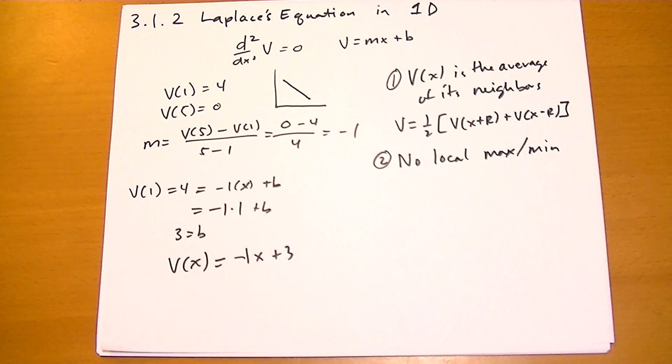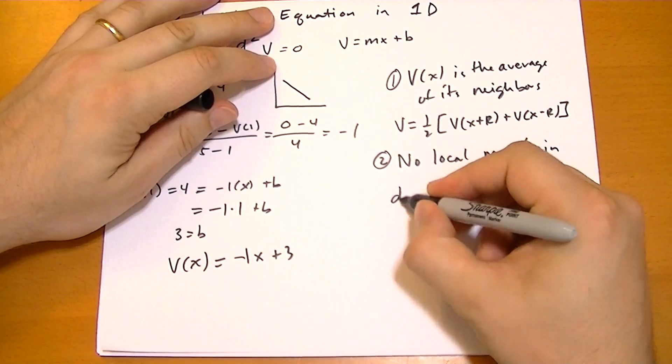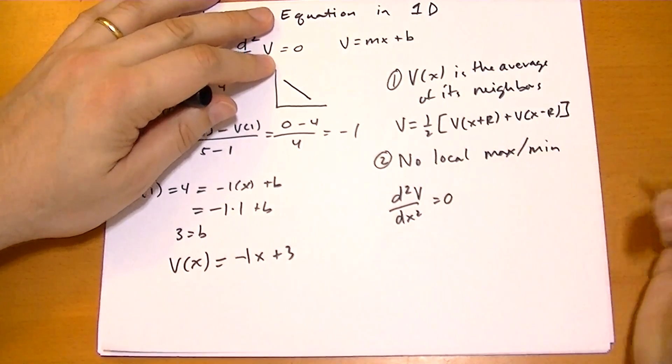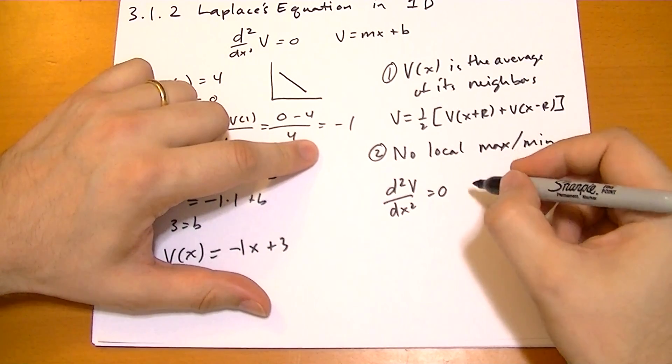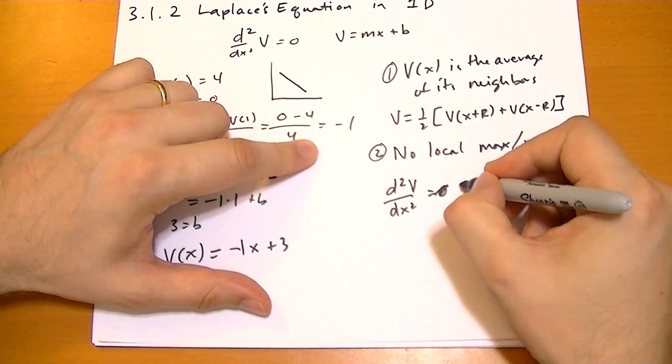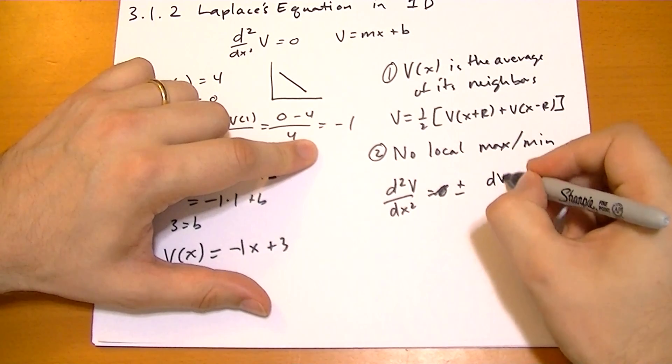So when you're finding maximum and minimum, we're going to look for something where the second derivative is 0. No, the first derivative is 0, I'm sorry. And the second derivative can be positive or negative, right? So the first derivative is 0.